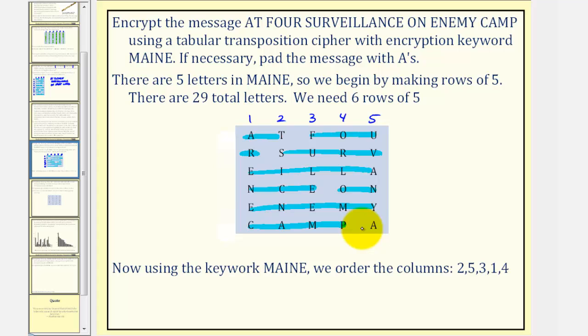But now we're not going to read the rows off from row one to row five. We're going to base it upon the letters in the word MAINE. If we order these letters alphabetically, notice A would be the first letter, which represents column two, so we'll read off column two first. The next letter would be E, the fifth letter, so we'll read off column five next.